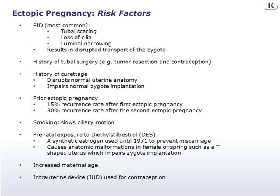The single most important risk factor for developing an ectopic pregnancy is a history of a previous ectopic pregnancy. The recurrence rate is fifteen percent after the first and thirty percent after the second. Smoking is another risk factor, as it is thought to slow down ciliary motion. Prenatal exposure to diethylstilbestrol (DES), a synthetic estrogen used until 1971 to prevent miscarriage, can cause anatomical malformations in female offspring including a T-shaped uterus in which implantation is impaired. Other risk factors include increased maternal age and the use of intrauterine devices (IUDs), especially those containing progesterone.